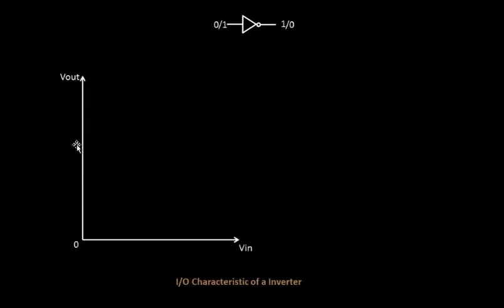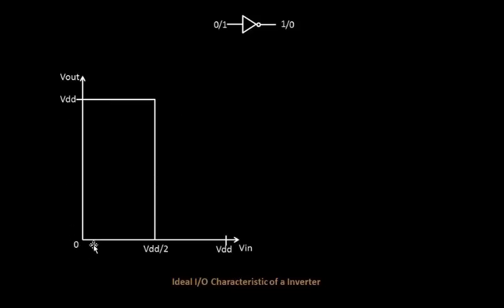You have the Vout axis on the Y axis and the Vin axis on the X axis. What this says is: when your input is 0, your output is high — it will be somewhere up here. And when your input is high, your output is 0 — it lies somewhere down here. So this graph says that when your input is 0, your output is VDD, and as you increase your input from 0 toward VDD, your output comes down to 0 voltage. This represents the behavior of an inverter.